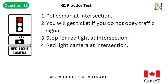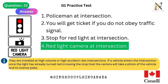Question 22. This traffic sign means: 1. Policeman at intersection. 2. You will get a ticket if you do not obey traffic signal. 3. Stop for red light at intersection. 4. Red light camera at intersection. Answer is 4. Red light camera at intersection. They are installed at high volume or high accident rate intersections. If a vehicle enters the intersection once the light has already turned red, crossing the stop line, the camera will take a photo of the vehicle and its license plate.